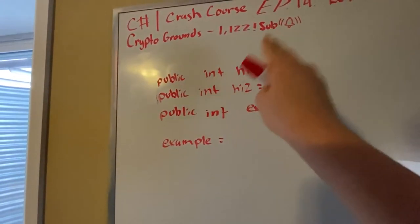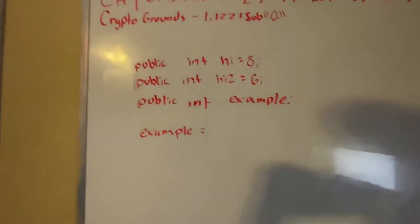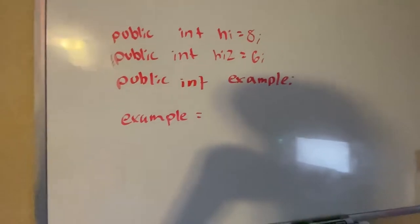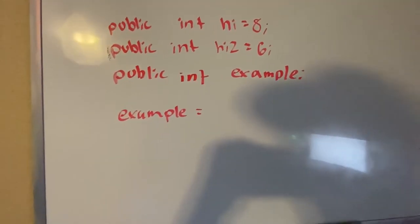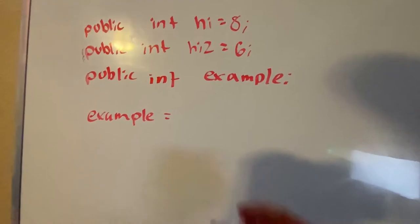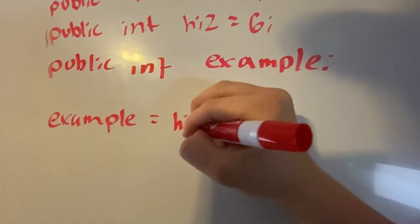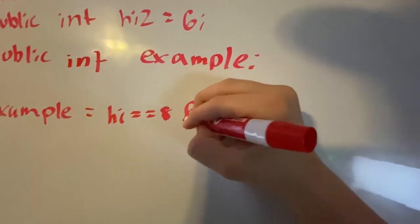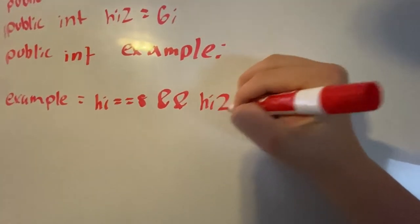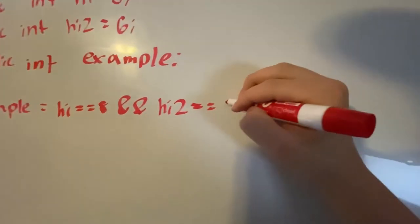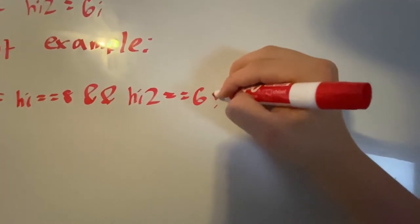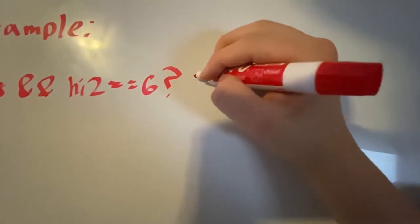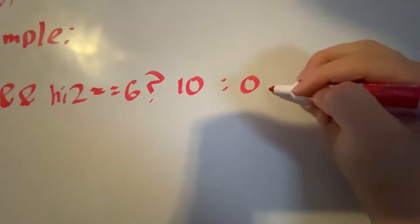So let's say we have two ints. Okay, so what we can do here, we can use all operators or two operators in one in the same thing here, right? So let's say we have, let's check if high is equal to eight, okay, and high two is equal to six, right? Question mark. We can have our true or false. If it's true, example will be set to 10. If it's false, then we can set it to zero.